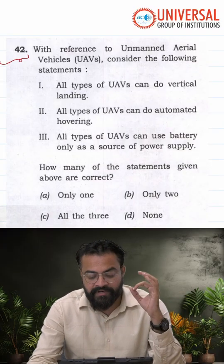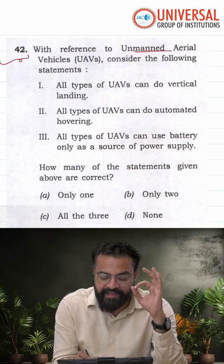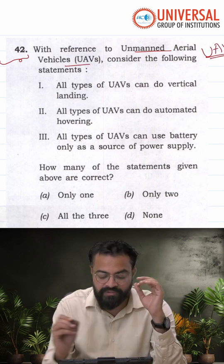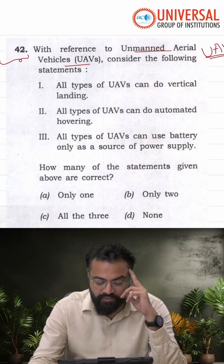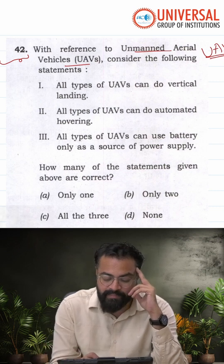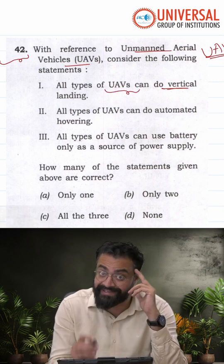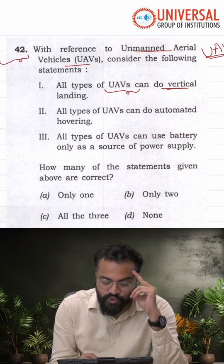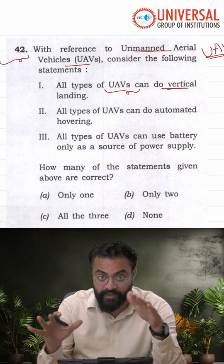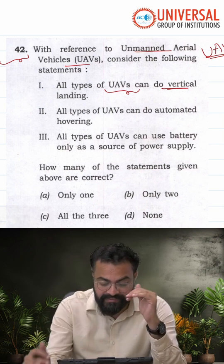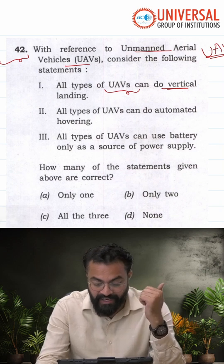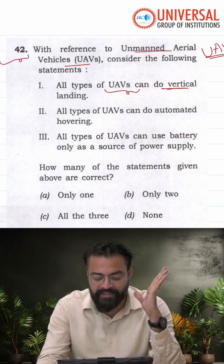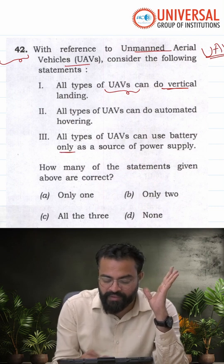With reference to the unmanned aerial vehicles, that is UAV, commonly known as drones, consider the following statements: all types of UAVs can do vertical landing; all types of UAVs can do automated hovering; all types of UAVs can use battery only as a source of power supply.